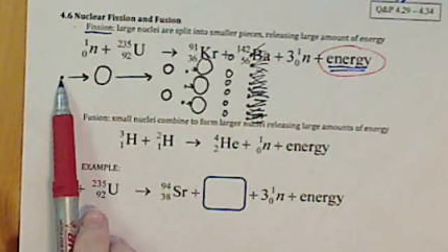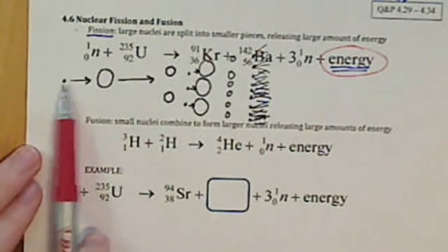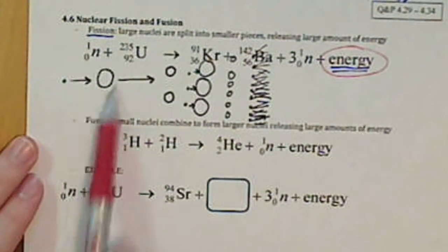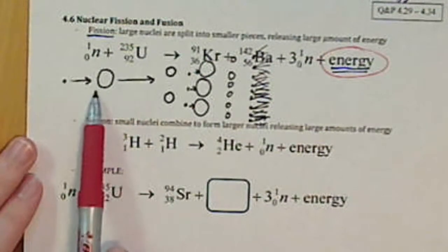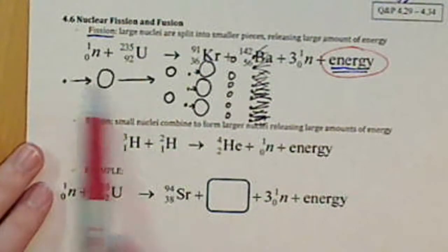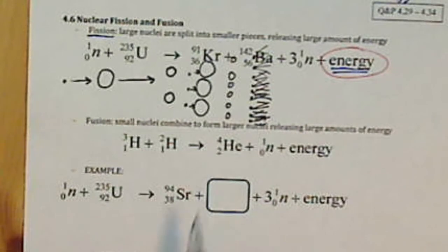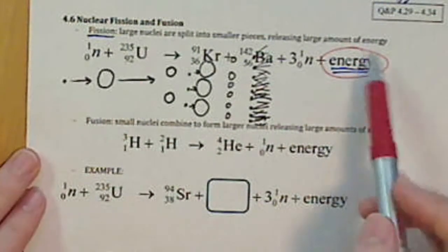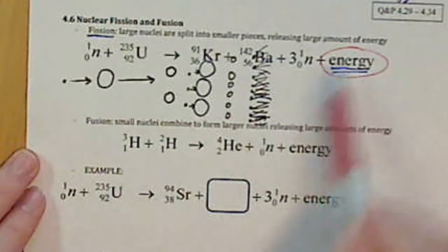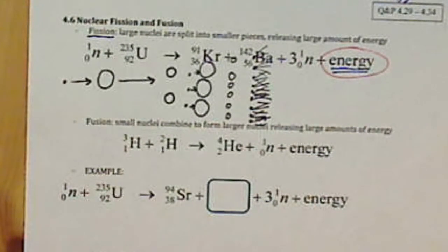So with starting with one neutron, as you can see, as long as we have a large nuclei present, we can quickly increase the amount of collisions that are happening and increase the amount of energy that is being given off.